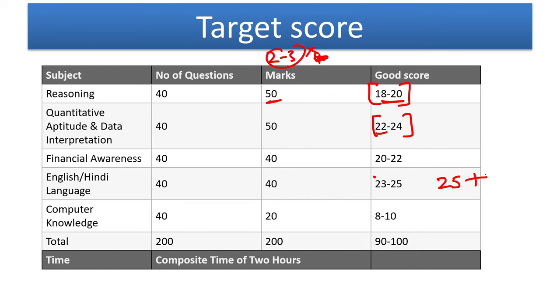In the computer knowledge, out of 20, 7-8 marks is, I would say, a good mark. 7-8-10 marks is a good score. So 90 to 100 is a good score. It's a very good score to get final selection. It's a good score to get allotment in any state, in Rajasthan, in UP.